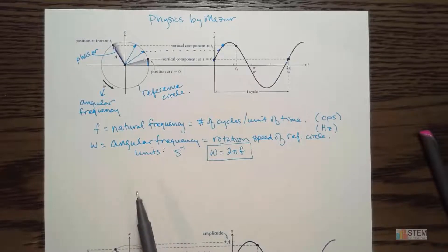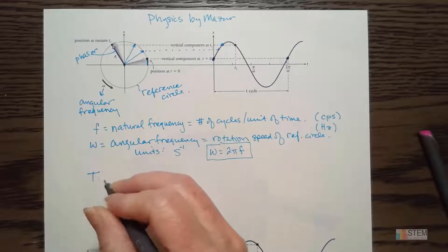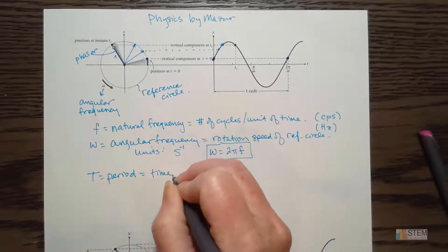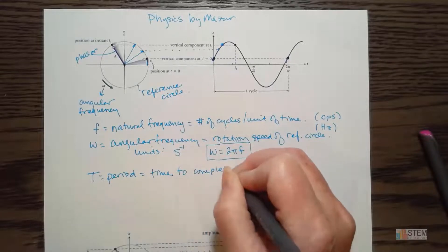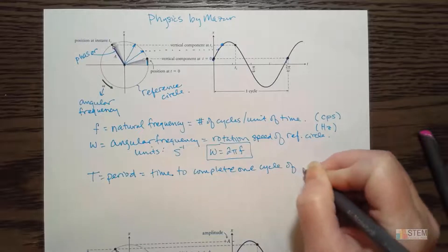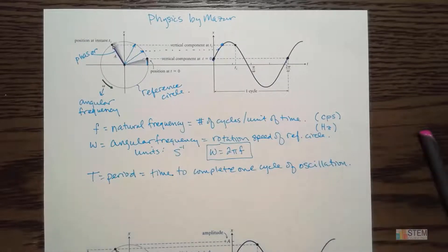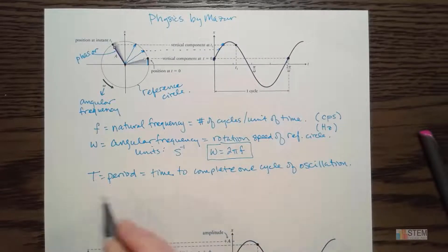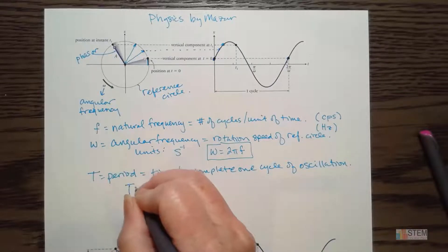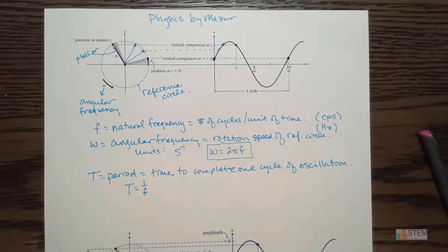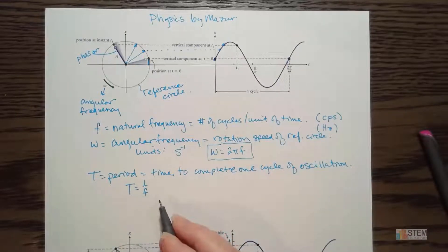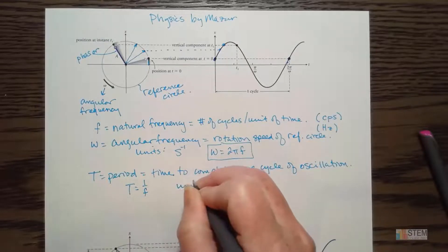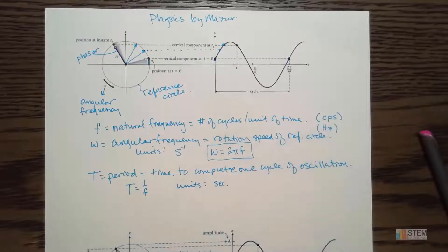One more term: capital T, which is for the period. The period is the time to complete one cycle of oscillation. If we have one cycle here, this is going to help find the period. The period is related to the natural frequency by T equals one over f.